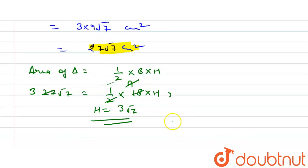So this is our answer, 3 root 7. This is our height length and it is in centimeter. Thank you.